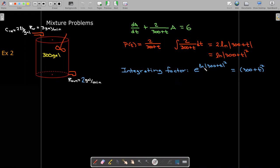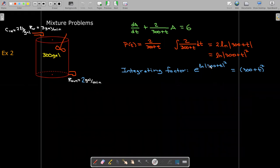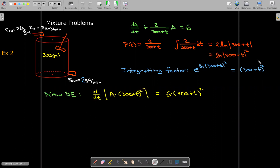But since I've got e to the natural log of absolute value 300 plus t squared, that's going to give me an integrating factor of in parentheses 300 plus t quantity squared. So when I multiply both sides of the differential equation by the integrating factor, I get a new differential equation. And I'll integrate both sides.